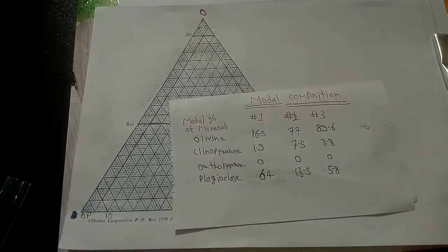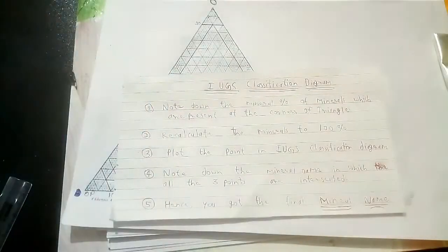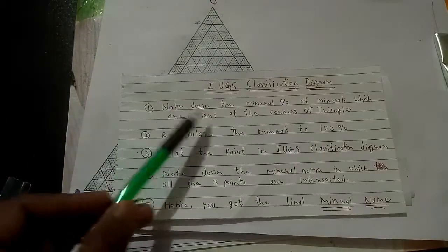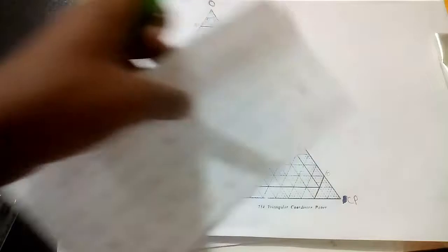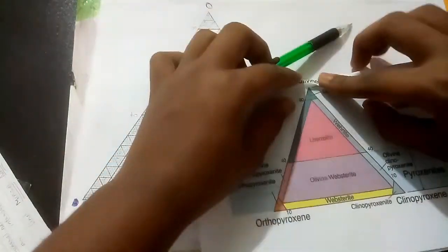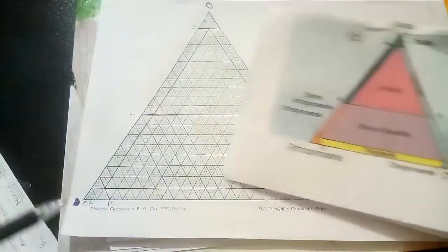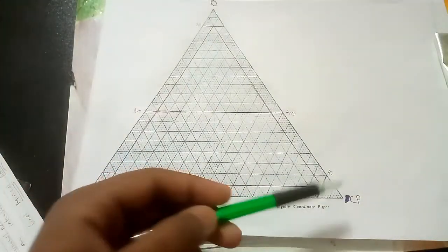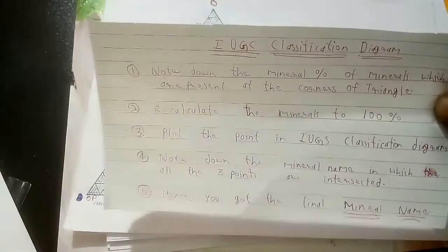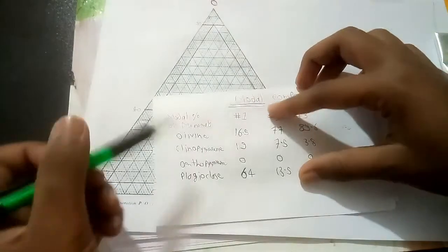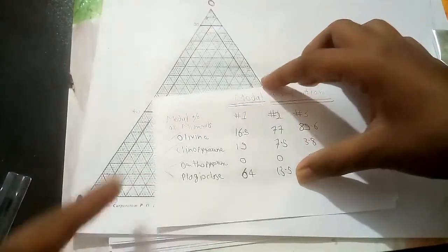Where are our steps? Have you guys written your steps for IUGS classification diagram? These are the steps. The first step is note down the mineral percent of minerals which are present at the corners of triangle. See here at the top it is olivine. Here orthopyroxene and here clinopyroxene. So it is O means olivine, OP means orthopyroxene, CP means clinopyroxene. We have to take only olivine, clinopyroxene and orthopyroxene, not plagioclase. Only three minerals we have to take.